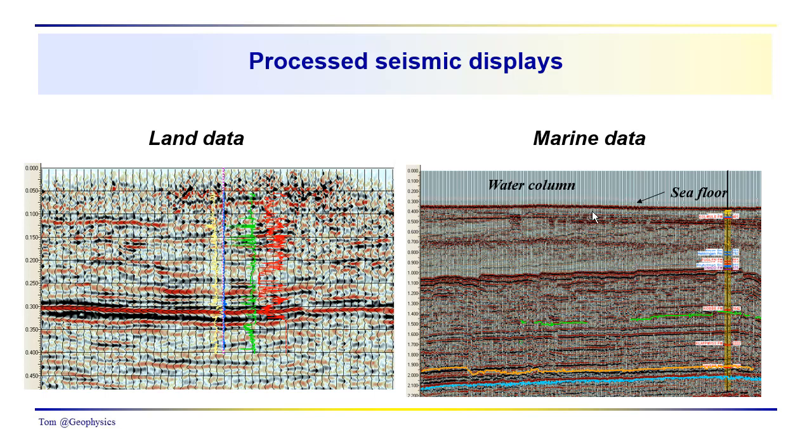This would be land data. This is marine data. Here you can see the water column. This would be a water bottom reflection. And you can see where the interpreter has marked off various intervals they've been able to identify and correlate. Here you can see that the interpreter has tried to correlate some reflections, not too successfully through this area, a little bit more successfully down here.